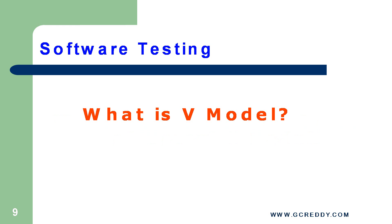What is V-Model? The V-Model is a framework to describe the software development life cycle activities from requirements specification to maintenance. It illustrates how testing activities can be integrated into each phase of the software development life cycle.